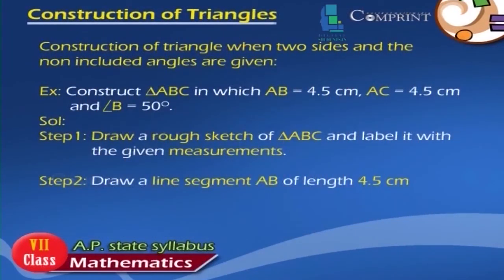Construction of triangle when two sides and the non-included angle are given. Example: Construct triangle ABC in which AB is equal to 4.5 cm, AC is equal to 4.5 cm, and angle B is equal to 50 degrees. Solution. Step 1: Draw a rough sketch of triangle ABC and label it with the given measurements.